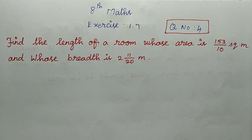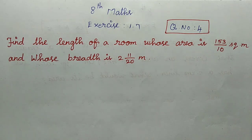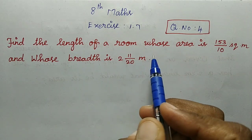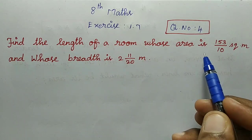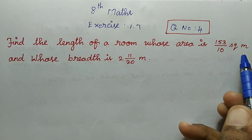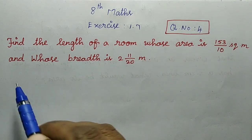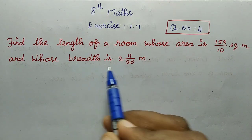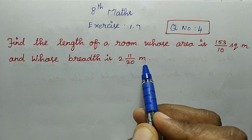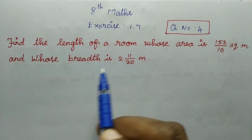8th Standard Math, Full Book Edition, Exercise 1.7, Question No. 4: Find the length of a room whose area is 153 divided by 10 square meters and whose breadth is 2 and 11 divided by 20 meters.